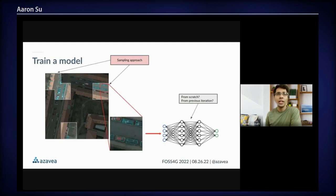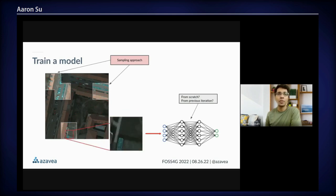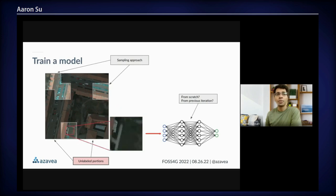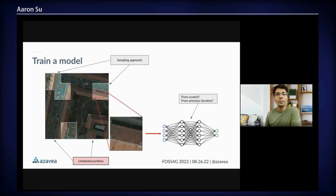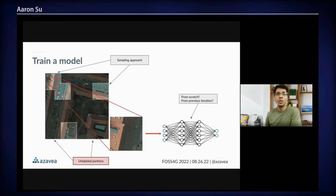Another sampling consideration, especially if you're using the same model in each round, is that it will get exposed to some parts of the image more often than others. So you might want to strike a balance on how often it sees old data versus new data. Thirdly and finally, we've made a big deal about sampling only from the labeled parts of the image. However, the unlabeled portions are not entirely useless. In fact, in the past few years a lot of research has gone into techniques like self-supervised and semi-supervised learning that are able to squeeze out useful training information even from data that is not labeled. Using those techniques with this kind of human-in-the-loop workflow could prove to be a powerful combination.